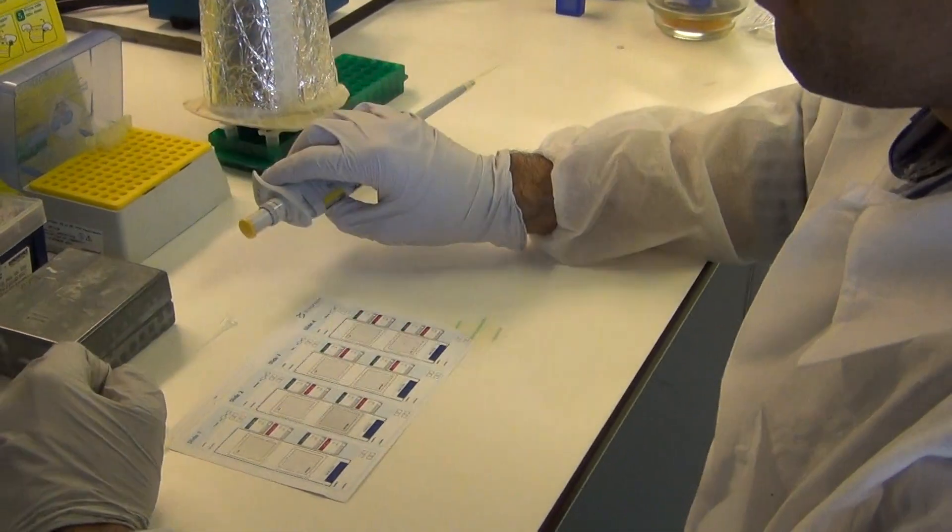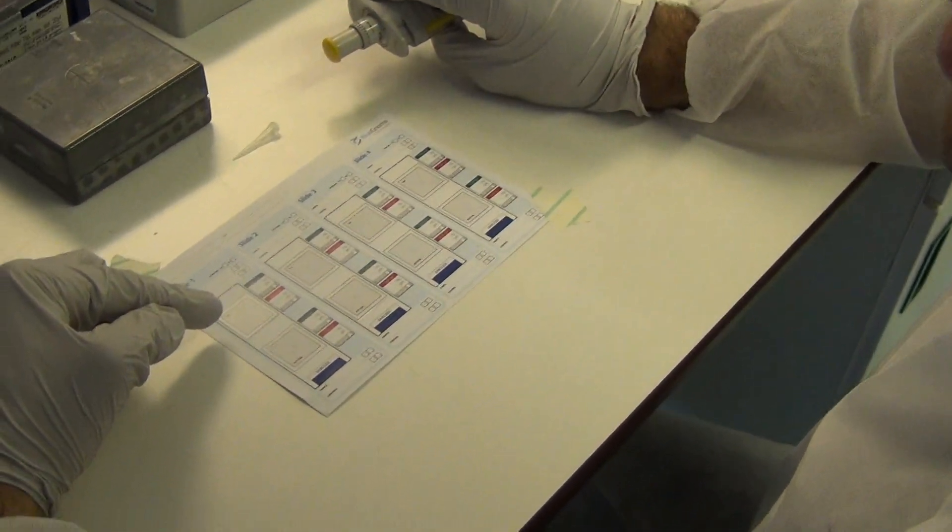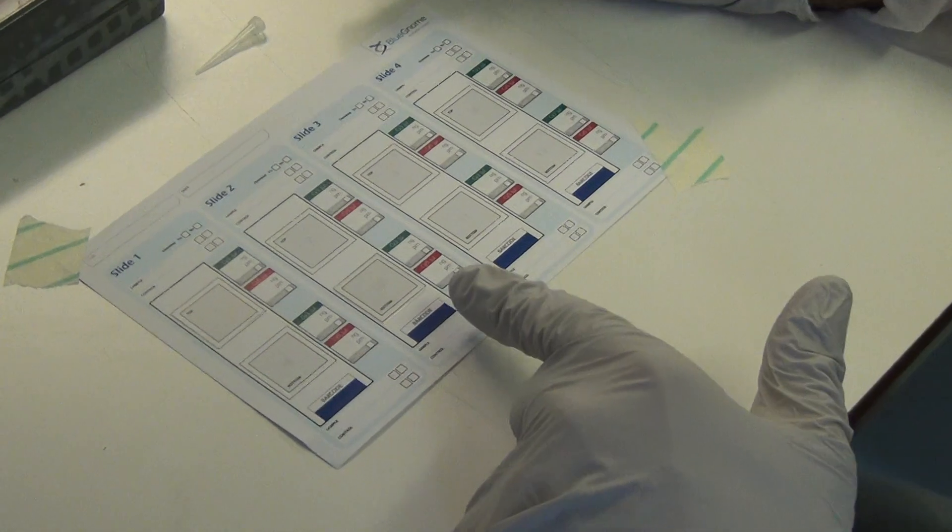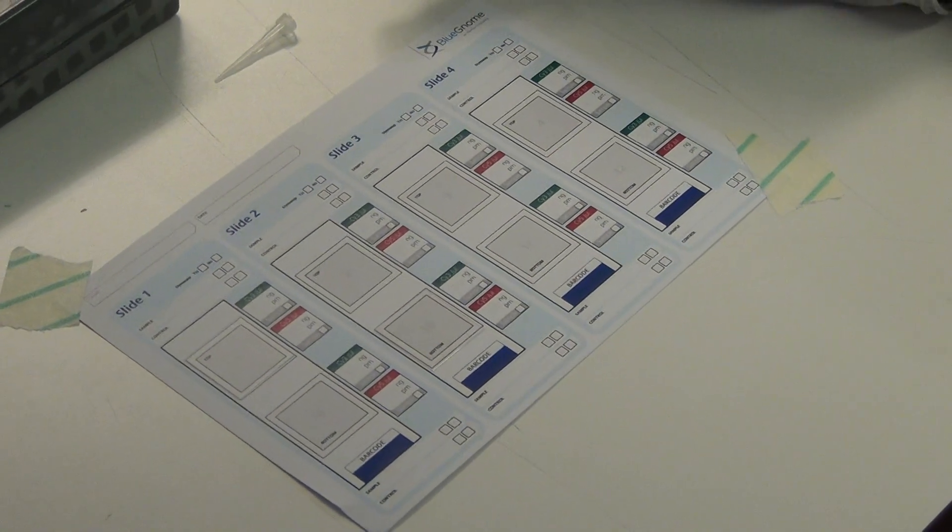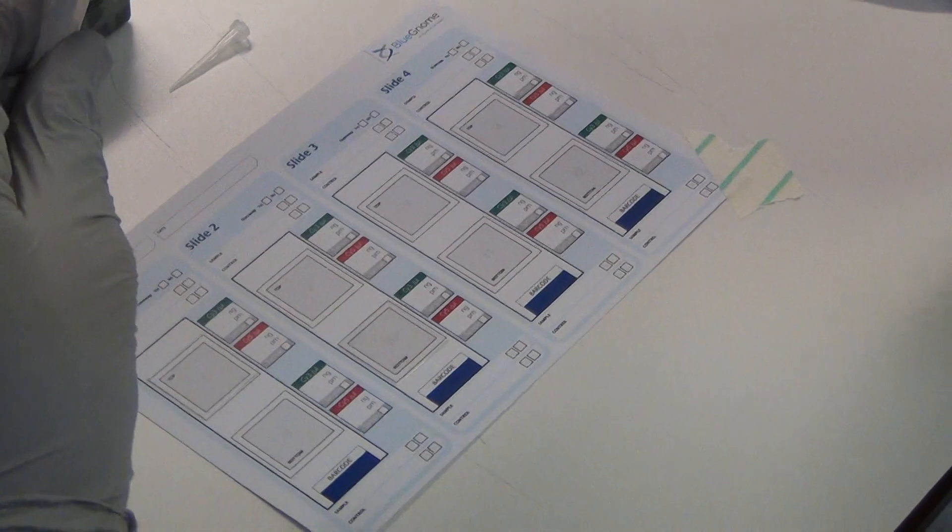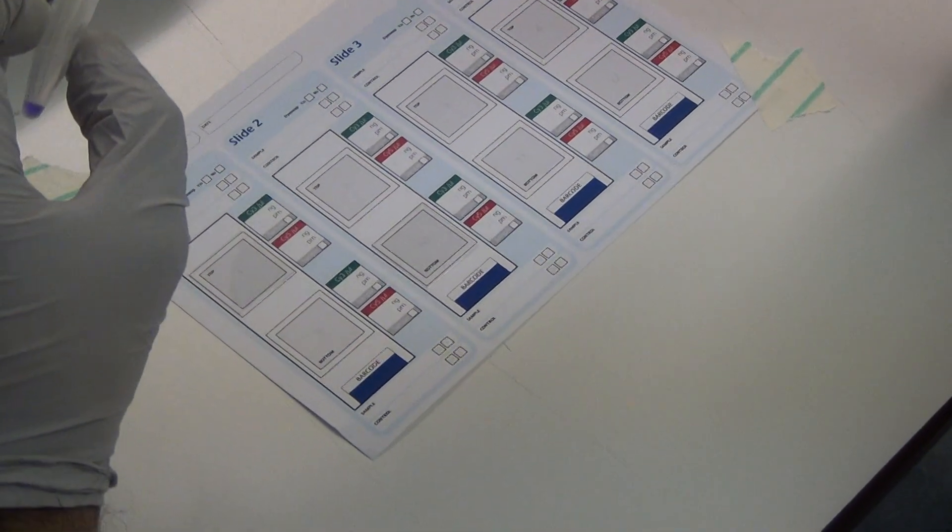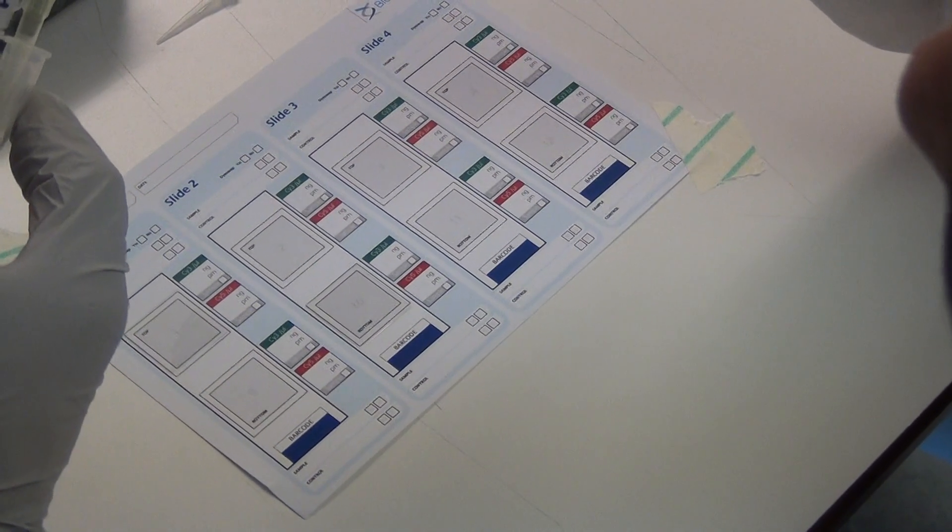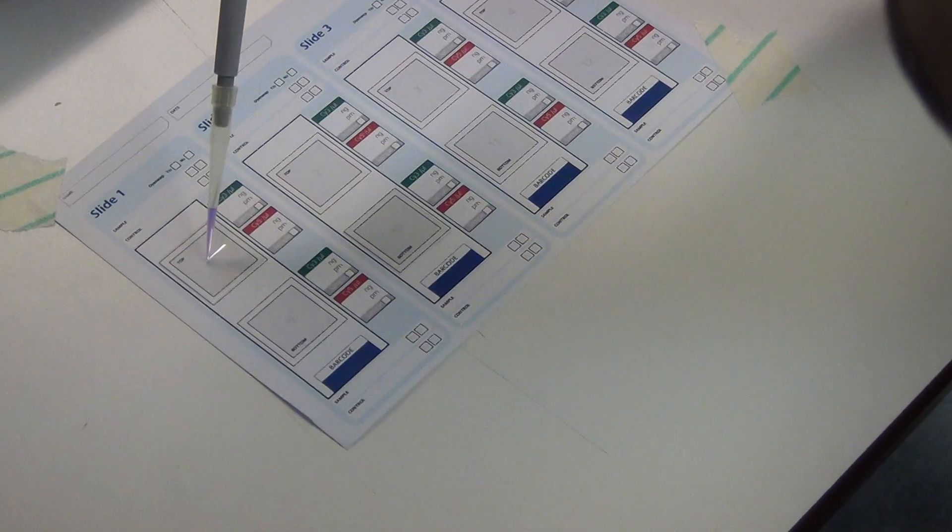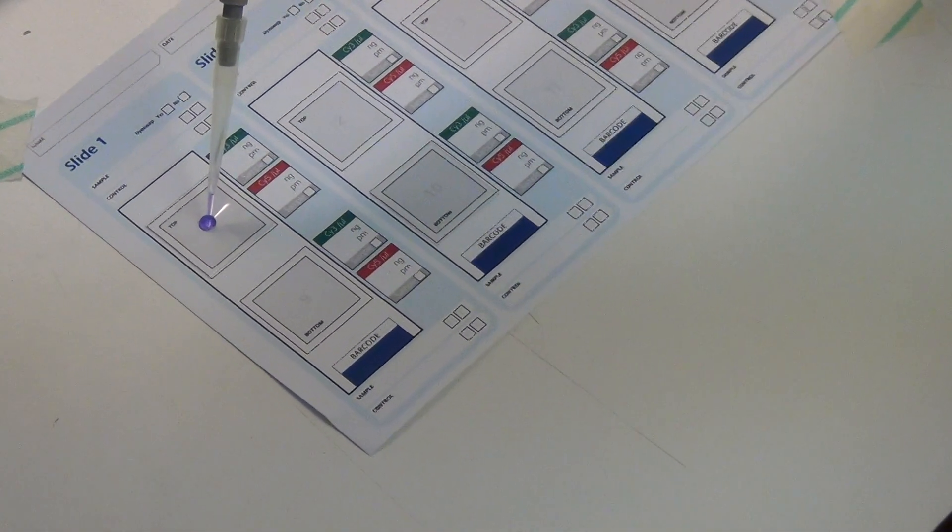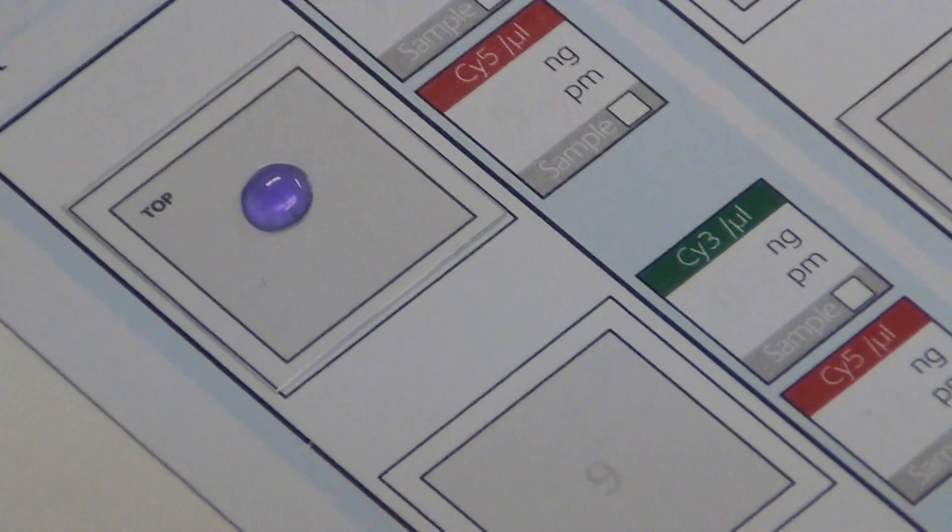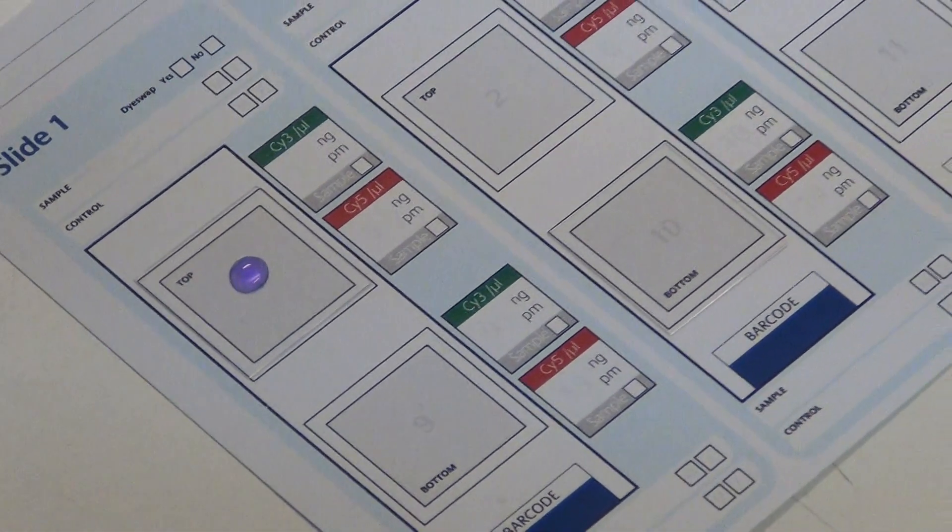First, place two coverslips on the designated top and bottom positions of the illustrated guide provided with the arrays. Second, dispense the products, taking care to avoid any air bubble formation. And now, to the bottom position.